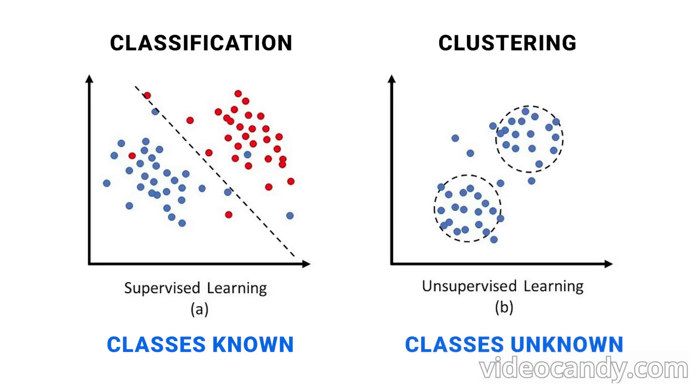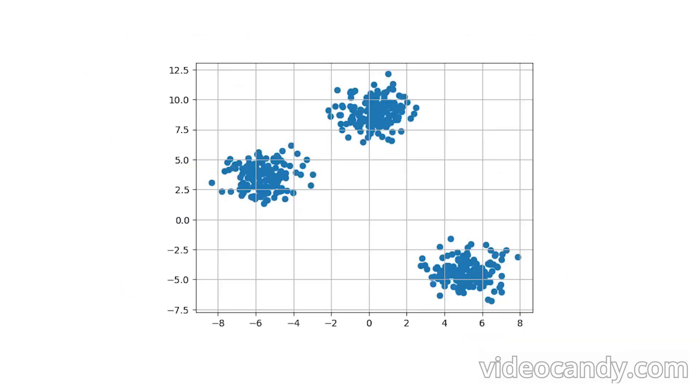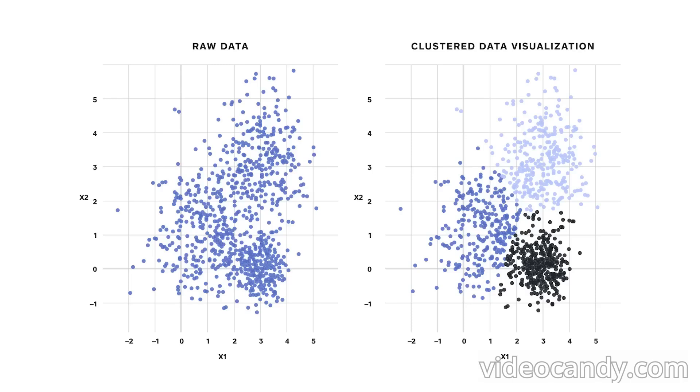For example, we might look at a two-dimensional dataset that looks like this. Any human will probably easily see three clusters here. But it's not always as straightforward as your data might also look like this. We don't know how many clusters there are because the problem is unsupervised.